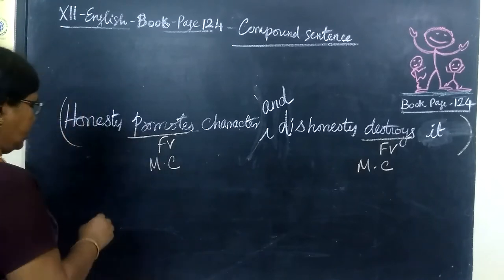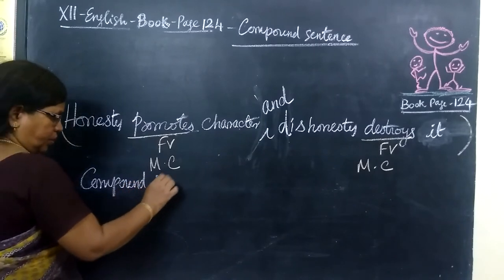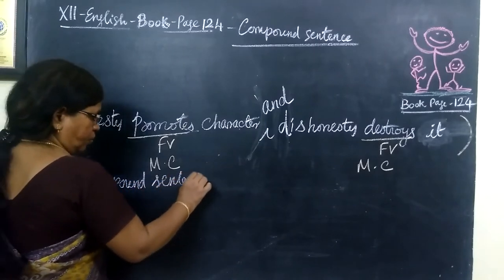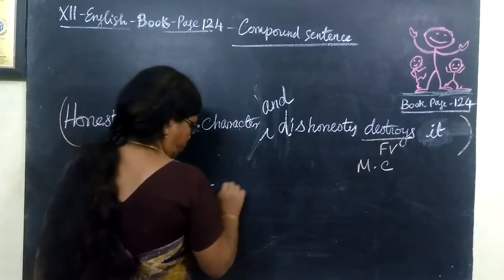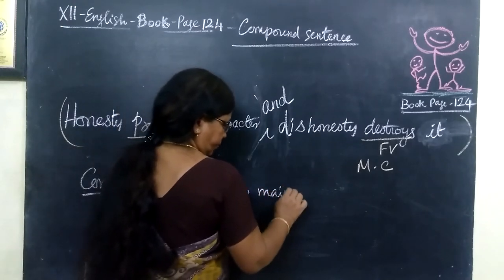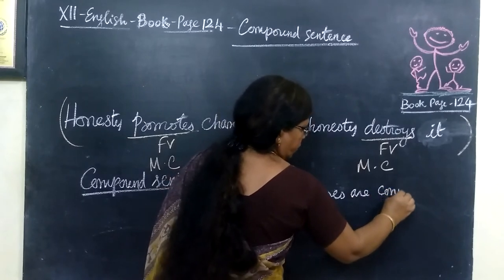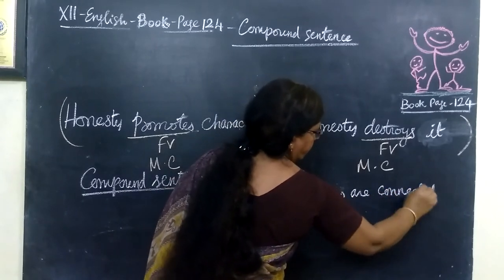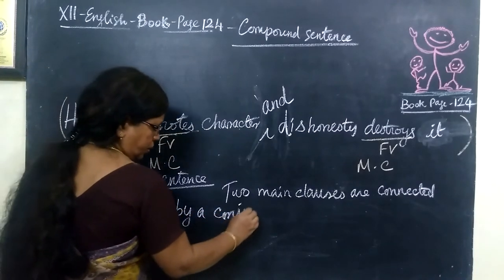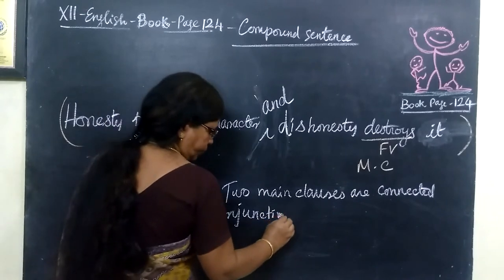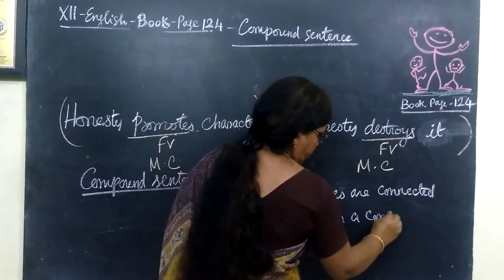So now we can form the definition for compound sentence. In the last class we have seen simple sentence. Now it is compound sentence. Compound sentence is very easy. Two main clauses are connected by a conjunction to form a compound sentence.